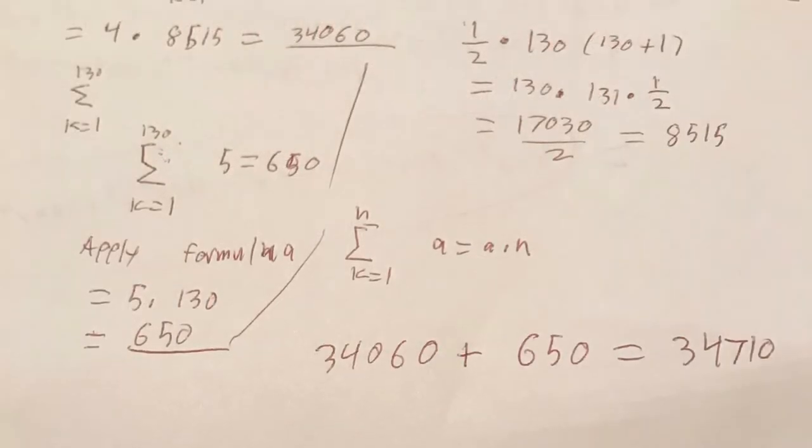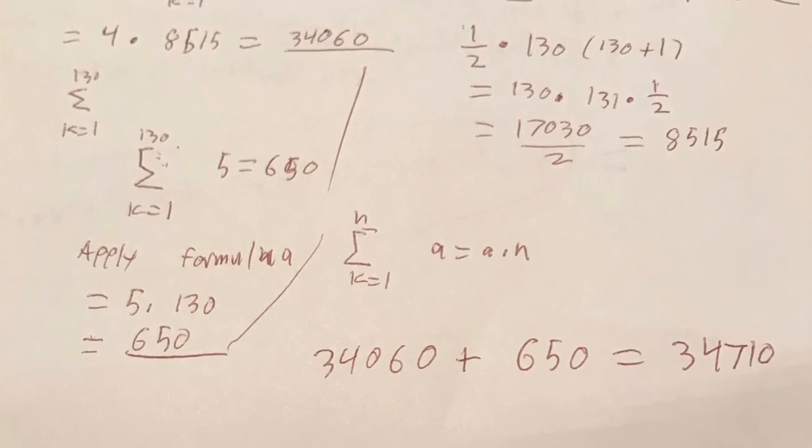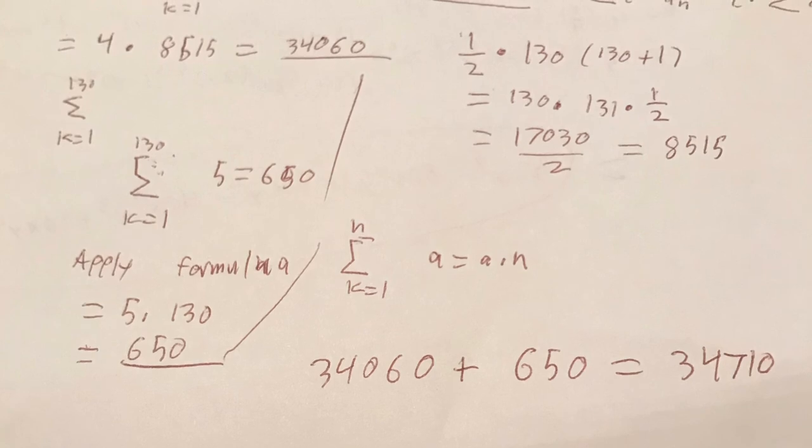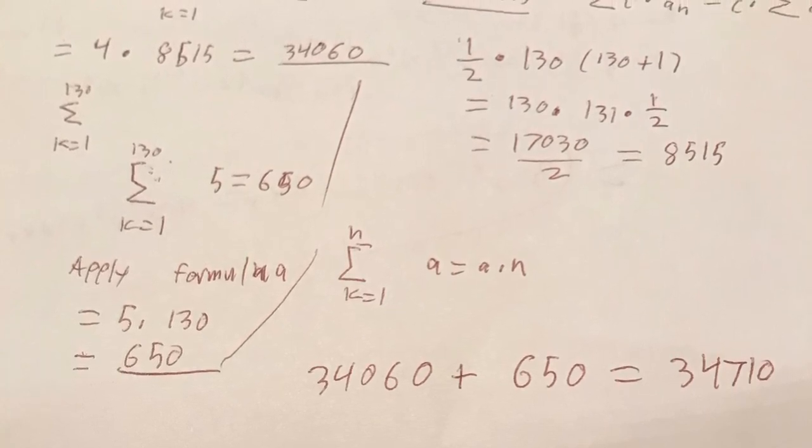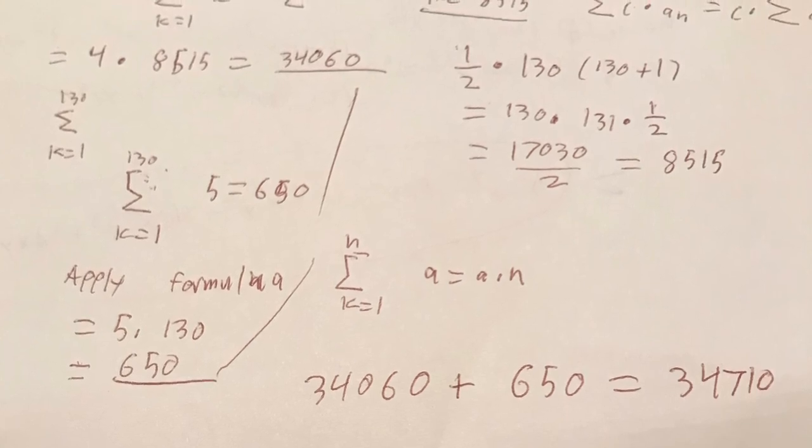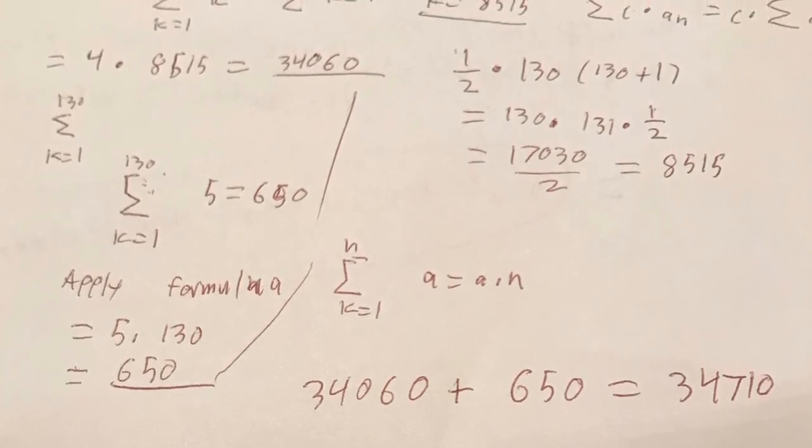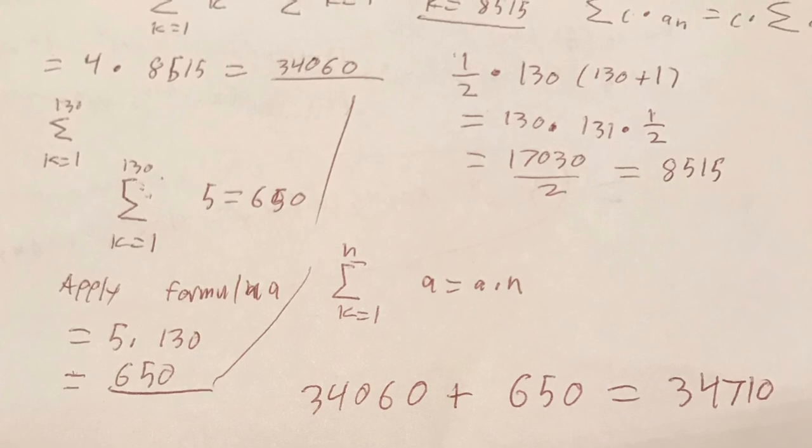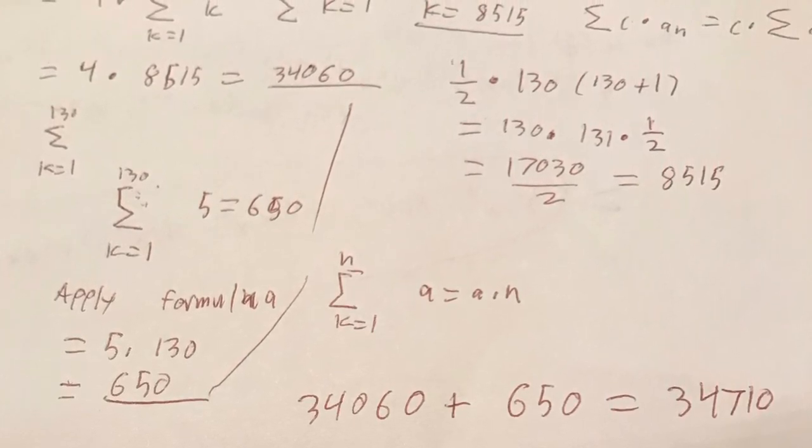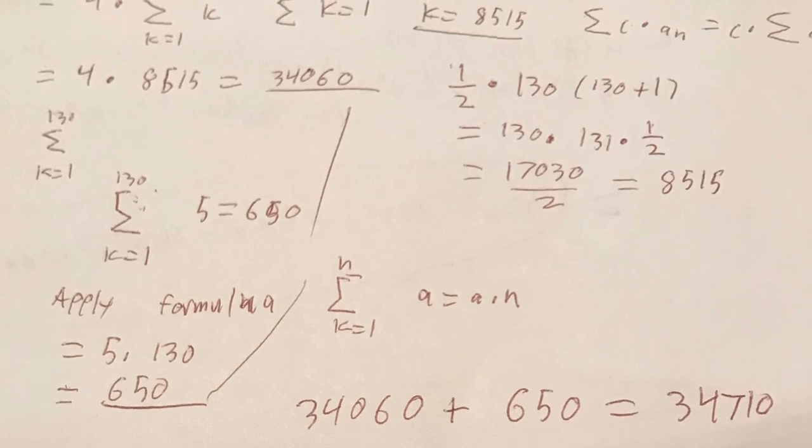So we take our two answers 650 plus 34,060 and we have a grand total of 34,710 which will be our final answer for the arithmetic sum of our first equation.